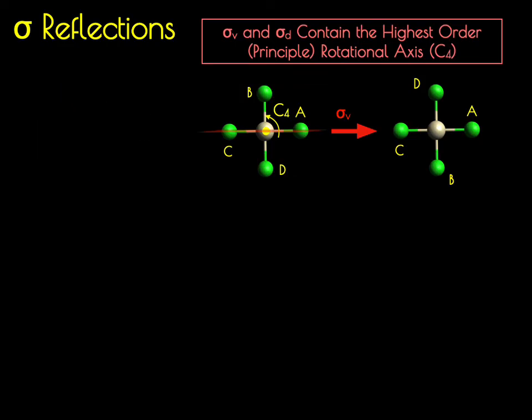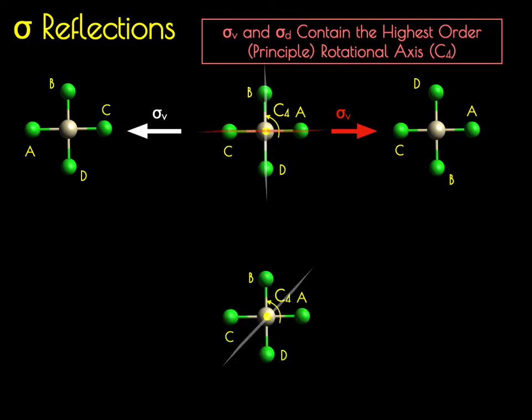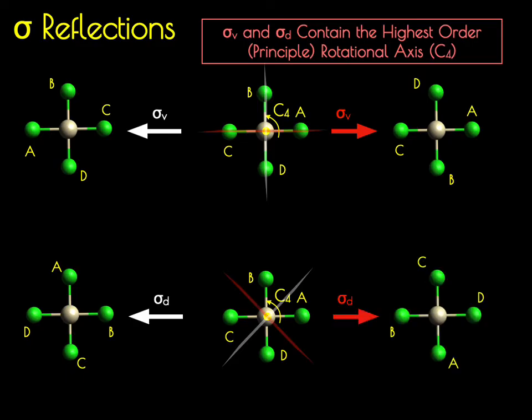We have the sigma V reflecting B and D, and there's another sigma V 90 degrees to that which reflects A and C. There are two more mirror planes that bisect the various chlorine-platinum-chlorine angles: one interconverts A and B and C and D. Because this is reflecting dihedral planes, it's a sigma D, distinct from those sigma Vs. There's another sigma D rotated 90 degrees from that original sigma D.